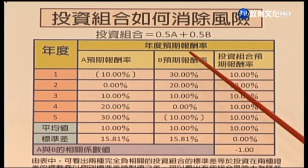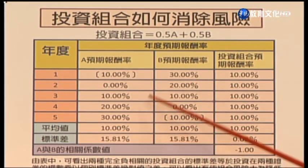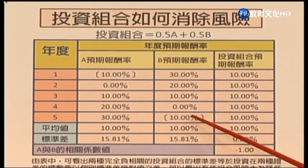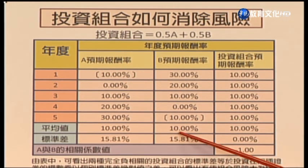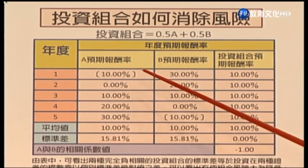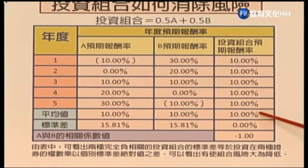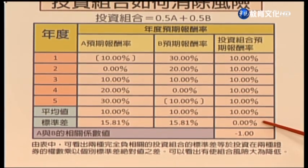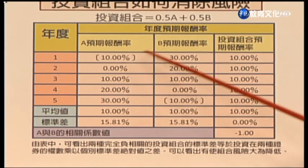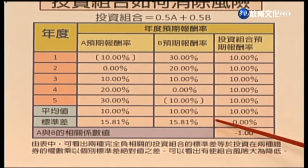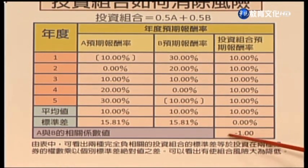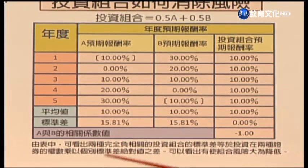資金一半投資在A股票、另外一半投資在B股票。五年中A股票是負的報酬，B股票就是正的，第五年A股票是正的30%，B股票變成負的，它們完全是反向走勢。它們的平均報酬都是五年下來10%，標準差也一樣，但一個高報酬一個就低報酬，按照一半一半的投資組合每年都是10%，但標準差竟然是0%，這是因為它們是完全負相關所造成的。